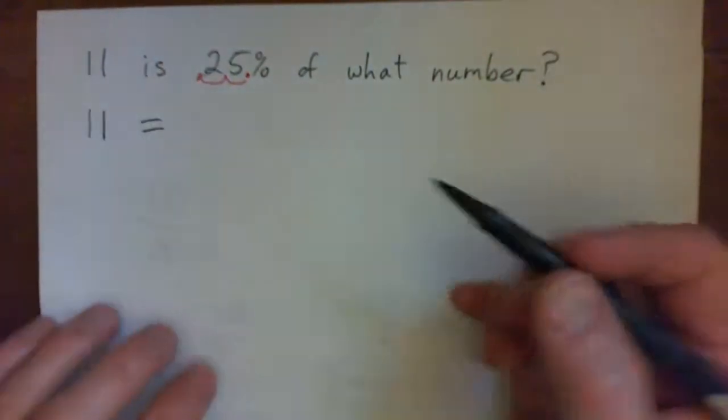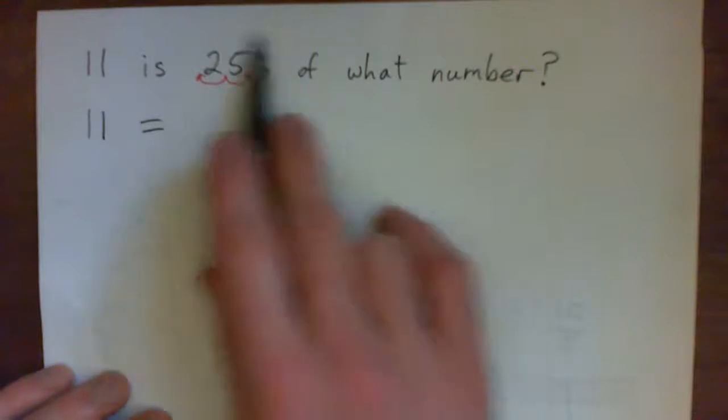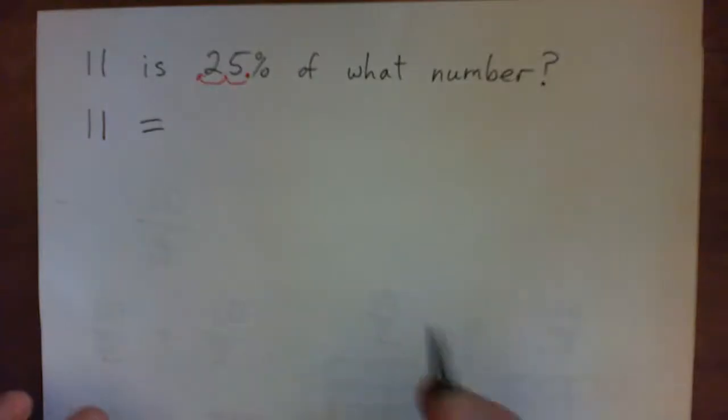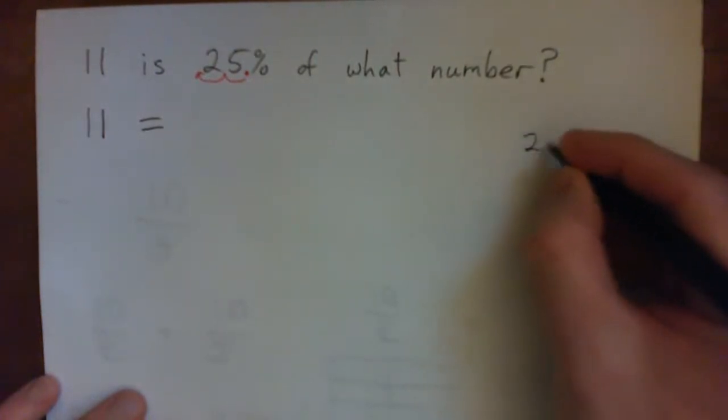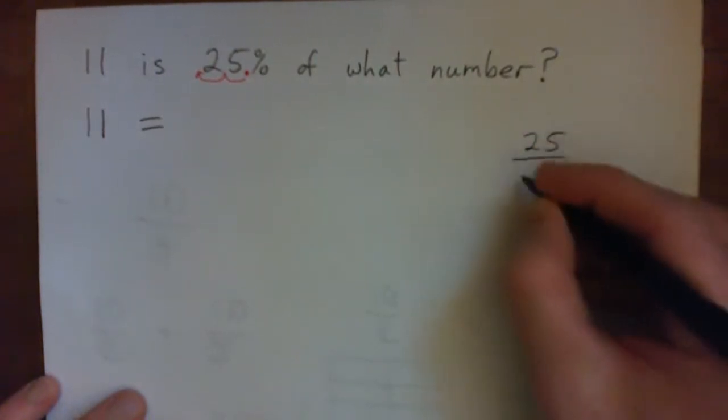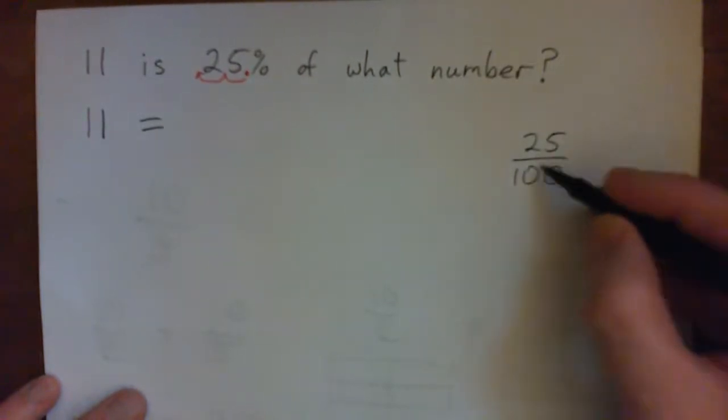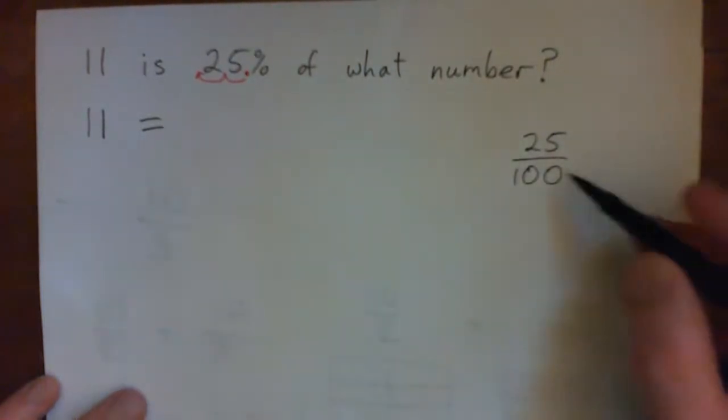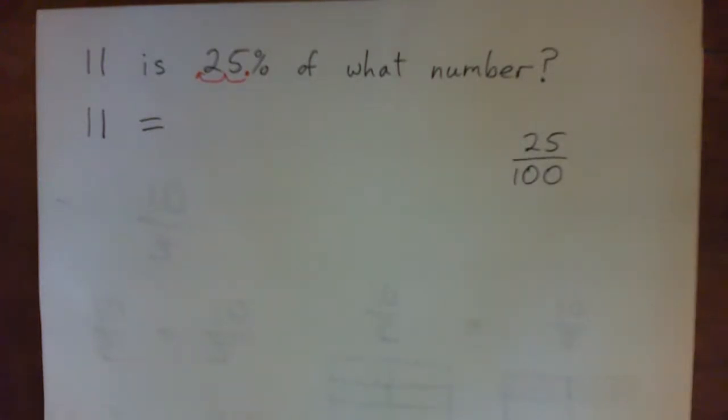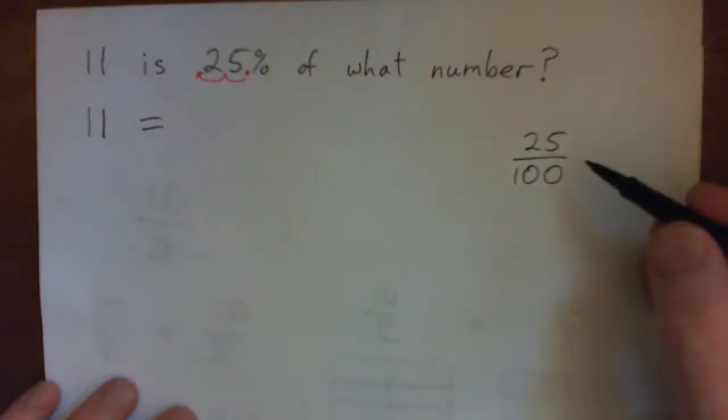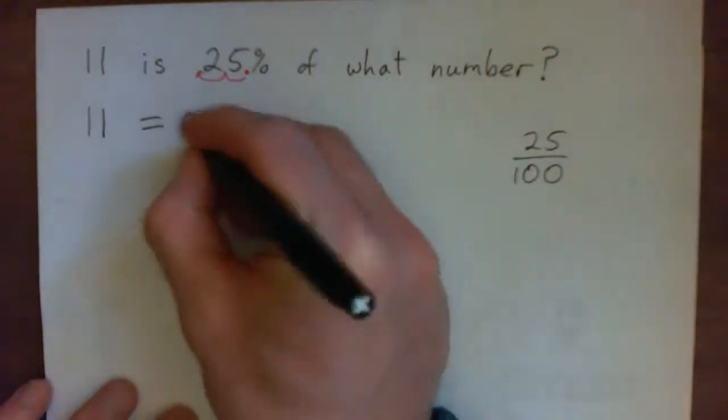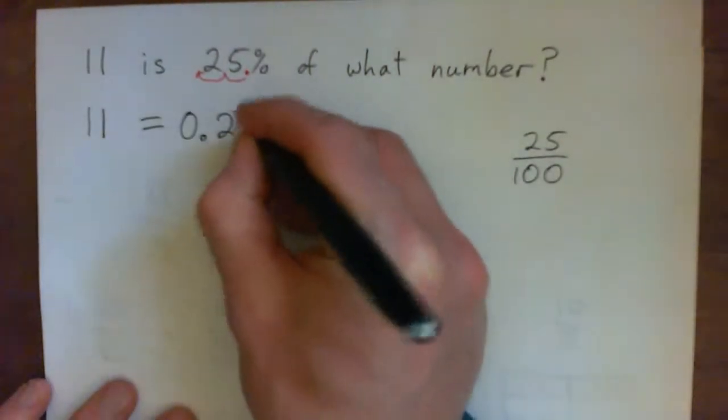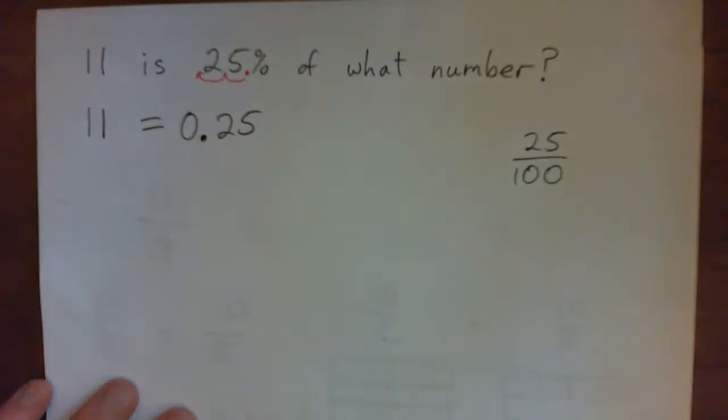But the problem with that is sometimes they forget, and sometimes if it's like five percent they'll call that 0.5 and stuff like that. The way to not make mistakes with percents is to actually understand them. I want you all to write this down: 25% is 25 divided by 100, 25 per 100.